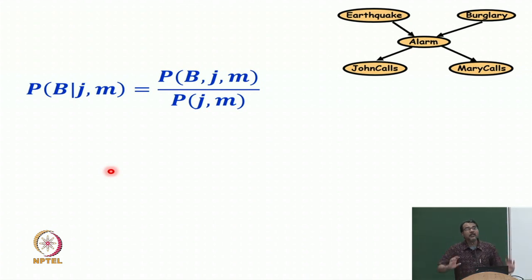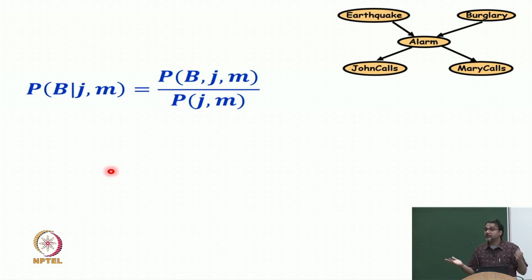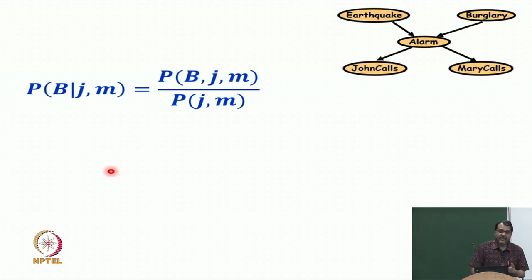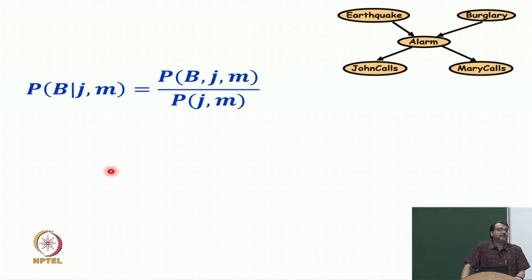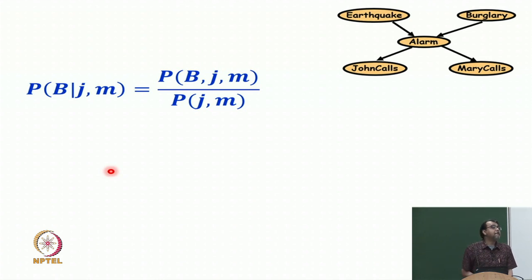The first thing we do is use the definition of conditional probability, so that becomes P(B, j, m) divided by P(j, m). The denominator does not matter — P(j, m) is a constant with respect to burglary true and burglary false. What we have to compute is the probability of burglary, which can be true or false. The numerator changes with burglary true and burglary false, and in both cases we divide by the same value. So we can simply say P(B | j, m) is proportional to P(B, j, m), or equivalently alpha times P(B, j, m). You will see this in all conditional probabilities — since the evidence is given, the denominator does not matter; we convert equality to proportionality.